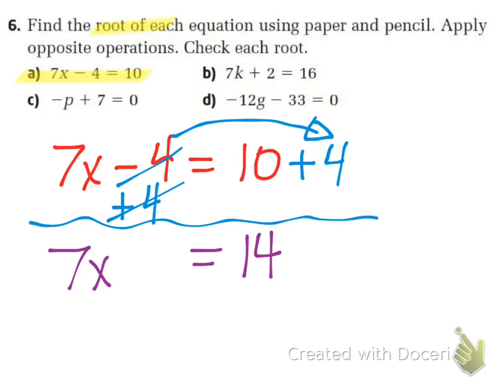Awesome. 14 divided by 7. And once again, remembering, whatever we do to one side, we have to do the other. So the logic here is that 7 divided by 7 is 1, and we're left with x equals 2. And right there, my friends, we have a solution.